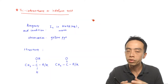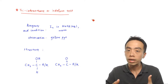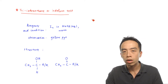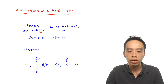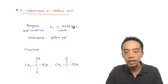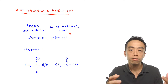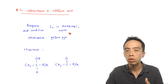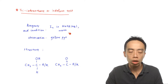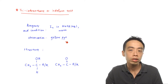Let us first run through the reagents and conditions to conduct this triiodomethane test or iodoform test. The reagents and conditions would be using iodine (I₂) in alkaline medium NaOH aqueous, with a little bit of warming. If a structure gives me a positive test, the observation we would expect would be a yellow precipitate.